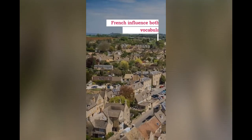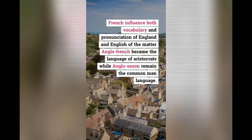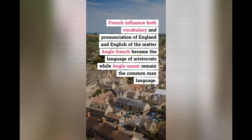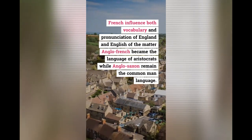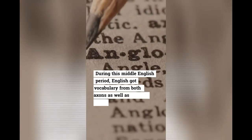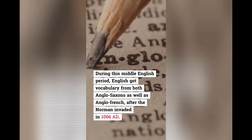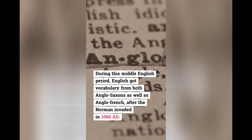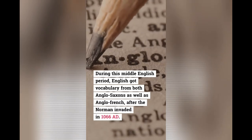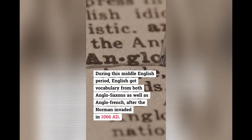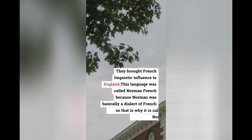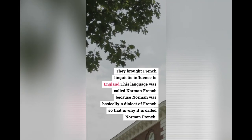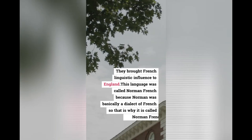France became the ruling power of England starting in 1066. A French-speaking ruling class was established, and French influenced both the vocabulary and pronunciation of English. Anglo-French became the language of aristocrats while Anglo-Saxon remained the common man's language. During the Middle English period, English gained vocabulary from both Anglo-Saxon and Anglo-French after the Normans invaded in 1066 AD.